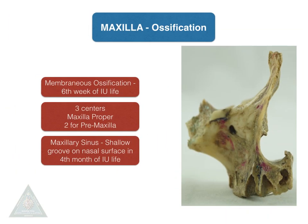Coming to the ossification of the maxilla — maxilla completely ossifies from the membrane from the sixth week of intra-uterine life. There are three primary centers: one for the maxillary proper and two for the premaxilla. The maxillary sinus starts by the fourth month of intra-uterine life as a shallow groove on the nasal surface of the bone.